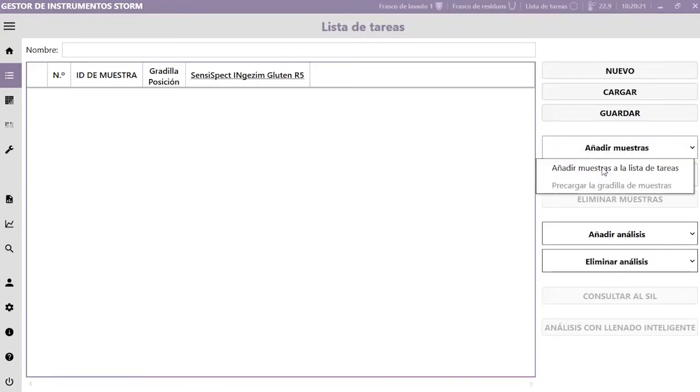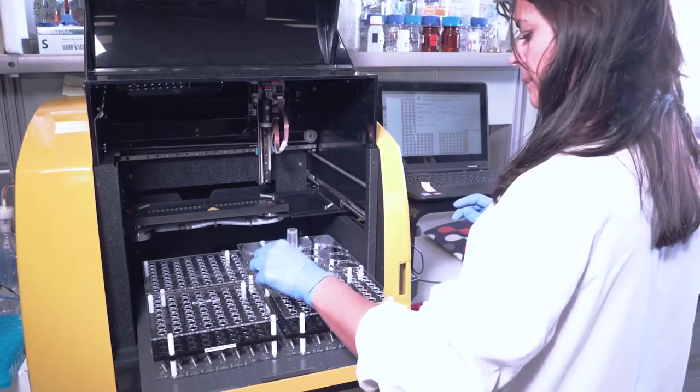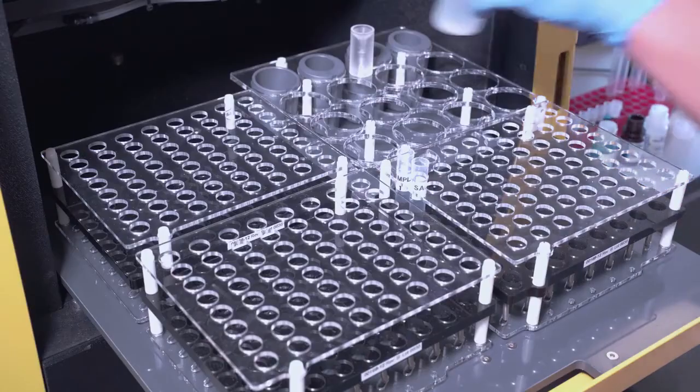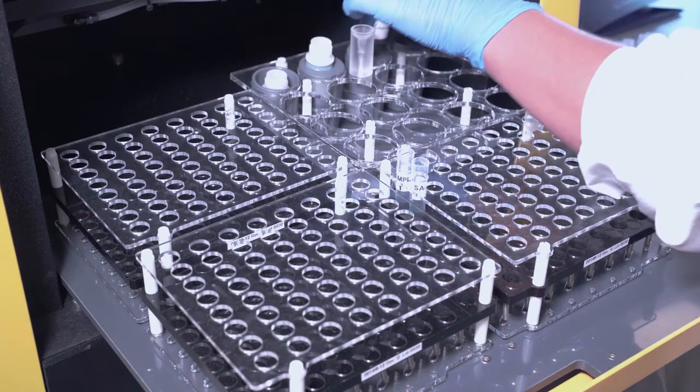Load the gluten program. Select the samples and the corresponding dilutions. Add the reagents and the calibration curve in the correct holes, following the program instructions.